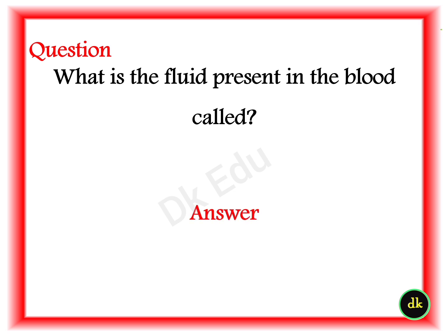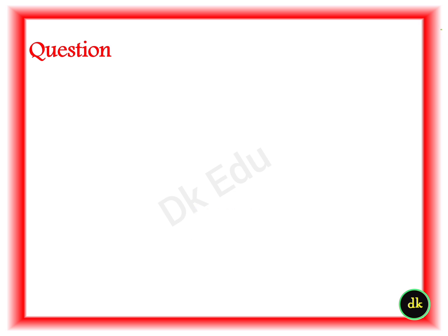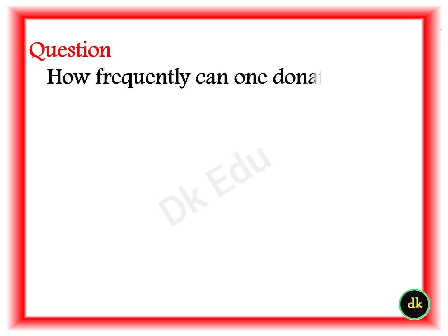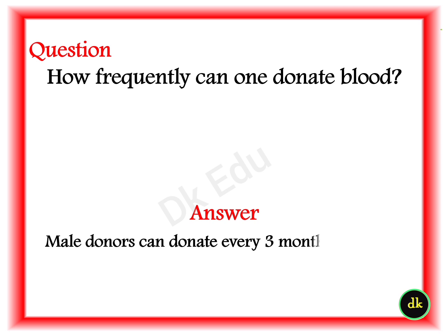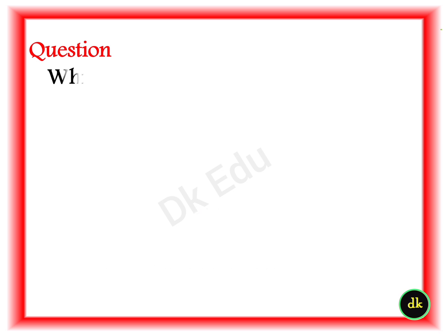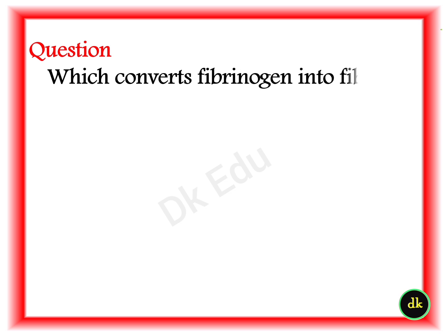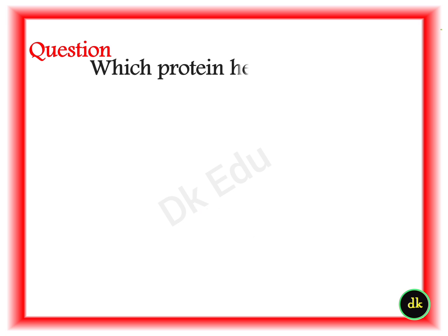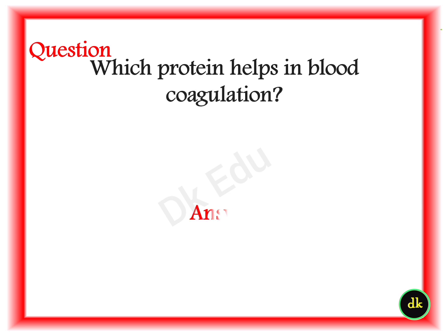A: Plasma. Q: How frequently can one donate blood? A: Male donors can donate every three months; female donors can donate every four months. Q: Which enzyme converts fibrinogen into fibrin? A: Thrombin. Q: Which protein helps in blood coagulation? A: Fibrin.